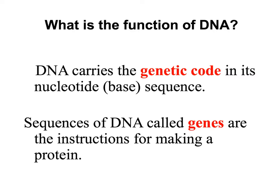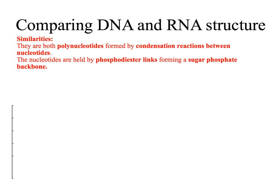DNA is the genetic information of the cell. It carries within its sequence of bases the information for making all the different types of proteins that a cell needs. Sections of DNA that carry the instructions for making a protein are called genes.